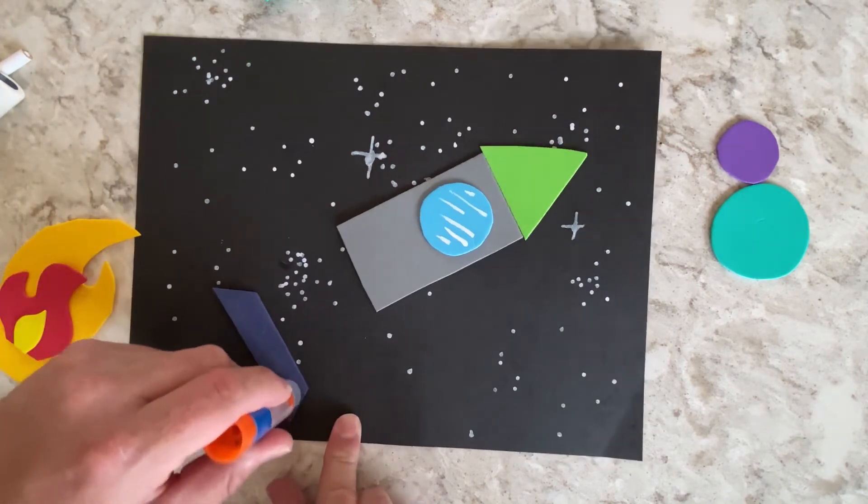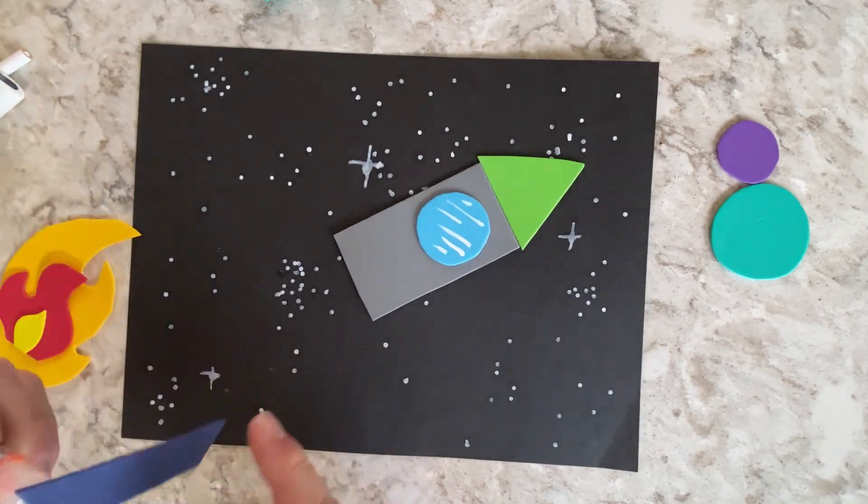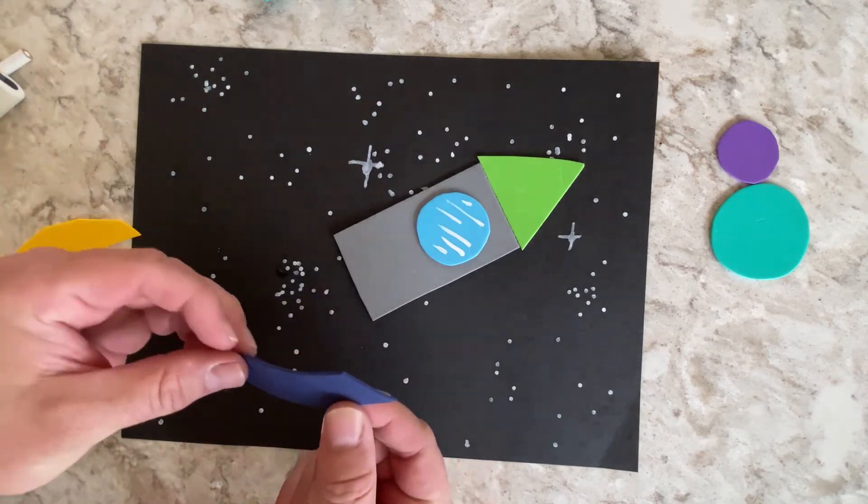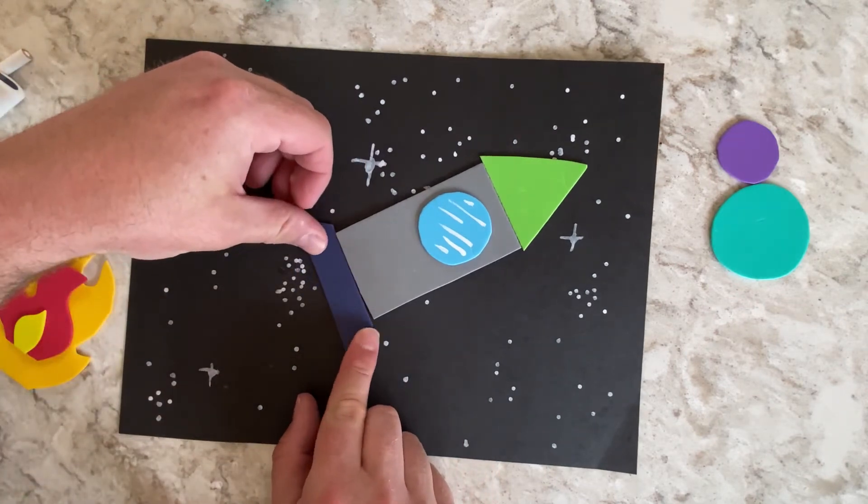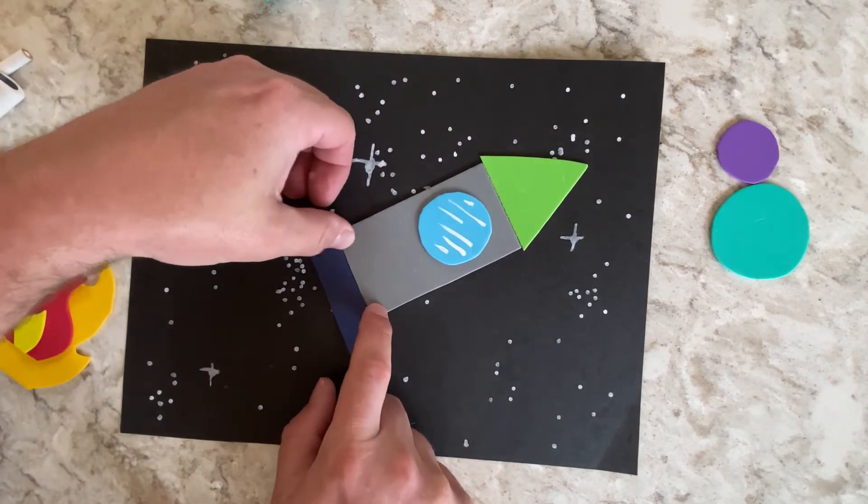I'm going to put some glue. Flip it over. Rocket combustion chamber is attached.